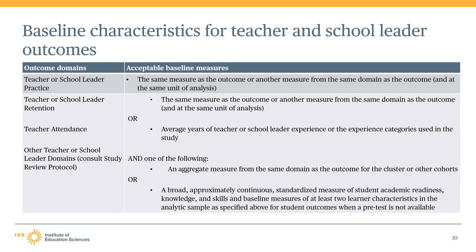For outcomes in the teacher or school leader retention, teacher attendance, and other teacher or school leader domains specified in the study review protocol, there are a few different acceptable baseline measures. This could include the same measure as the outcome, or another measure from the same domain at the same unit of analysis, or the average years of teacher or school leader experience in addition to an aggregate measure from the same domains as the outcome. Another option is to satisfy this with a broad measure of academic readiness, knowledge and skills, as well as at least two of the learner characteristics described previously.